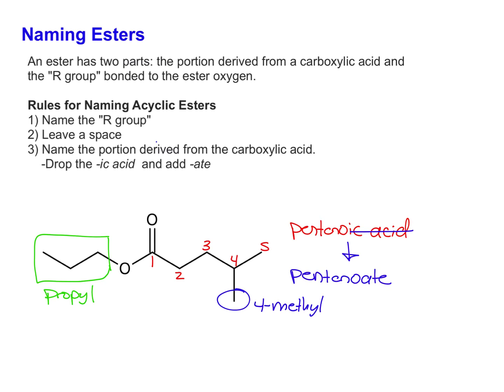So if we put this all together to generate the overall name for this, we start with the R group and we have propyl. Then we leave a space. List your substituents alphabetically, but we only have one to deal with. We have 4-methyl. And then the parent is pentanoate.